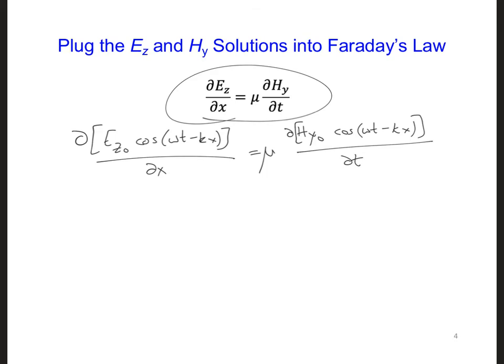On the left side, for the partial space derivative, we can take the derivative of cosine. So we're going to get E z naught minus sine, derivative of cosine, omega t minus kx. And then we also have to take the derivative of this minus kx inside the sine, since we're taking the partial derivative with respect to x. So that's going to put a minus k out in front.